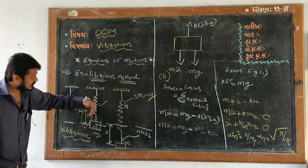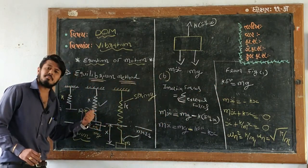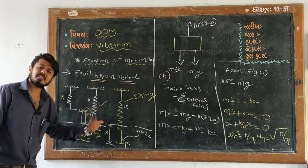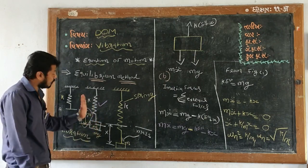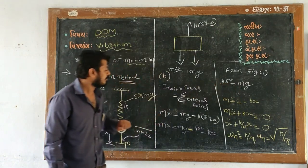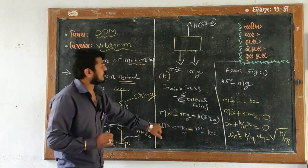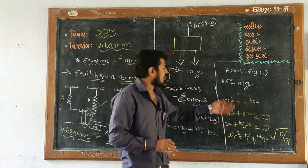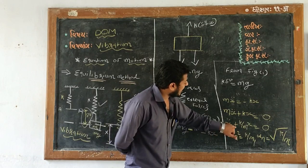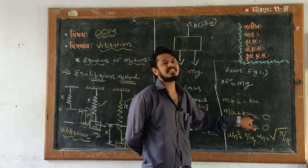Now, looking at figure 2, when only mass m is attached with no external force, the equilibrium condition gives k·delta_st = m·g. Substituting m·g in place of k·delta_st in our equation, the m·g terms cancel. So the equation simplifies to: ẍ + (k/m)·x = 0.